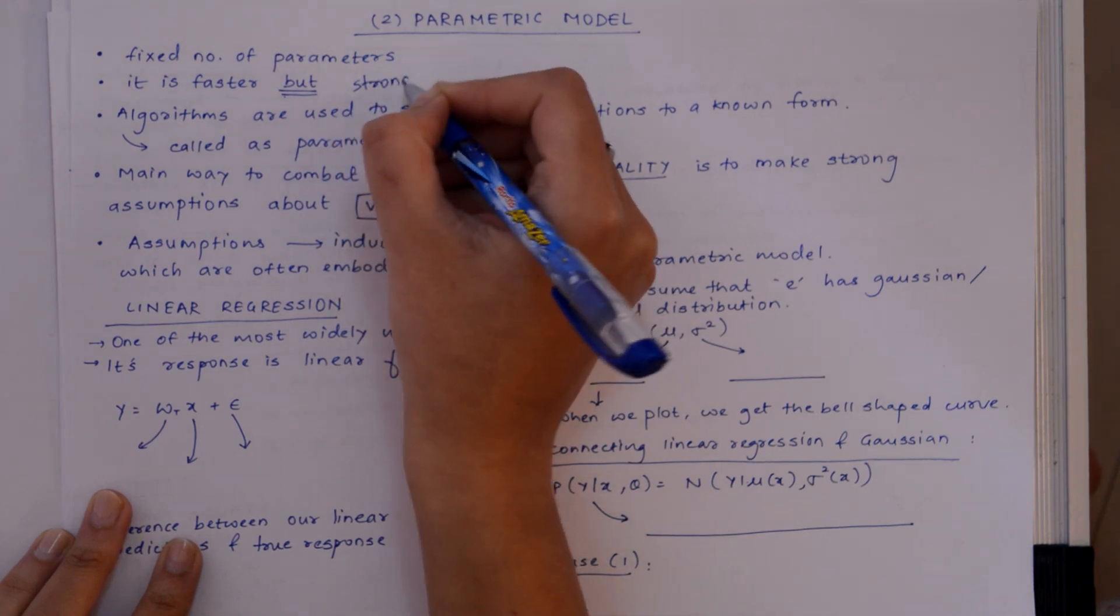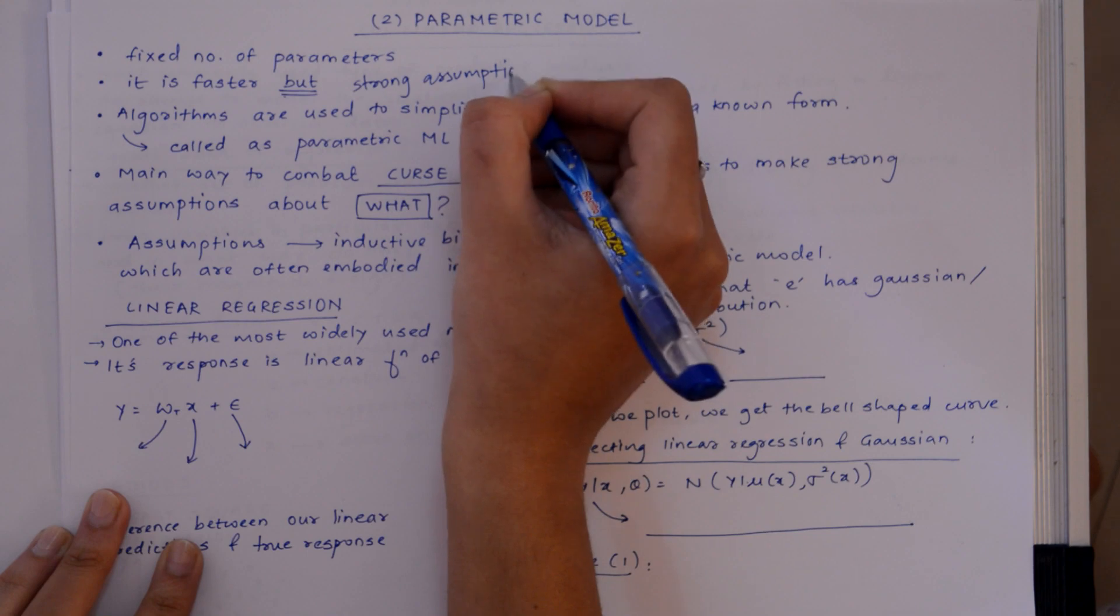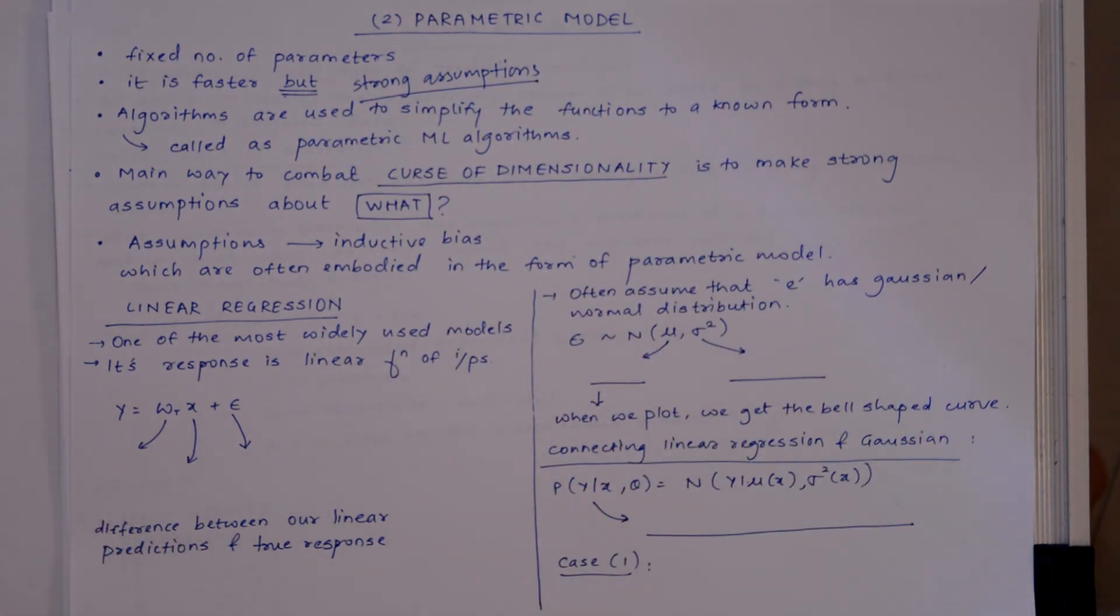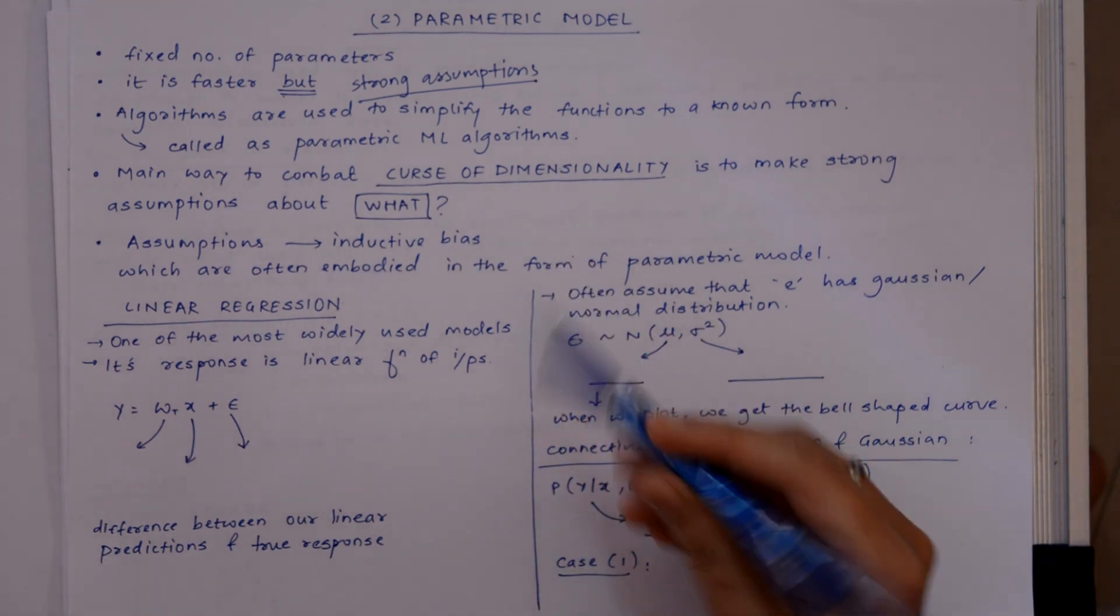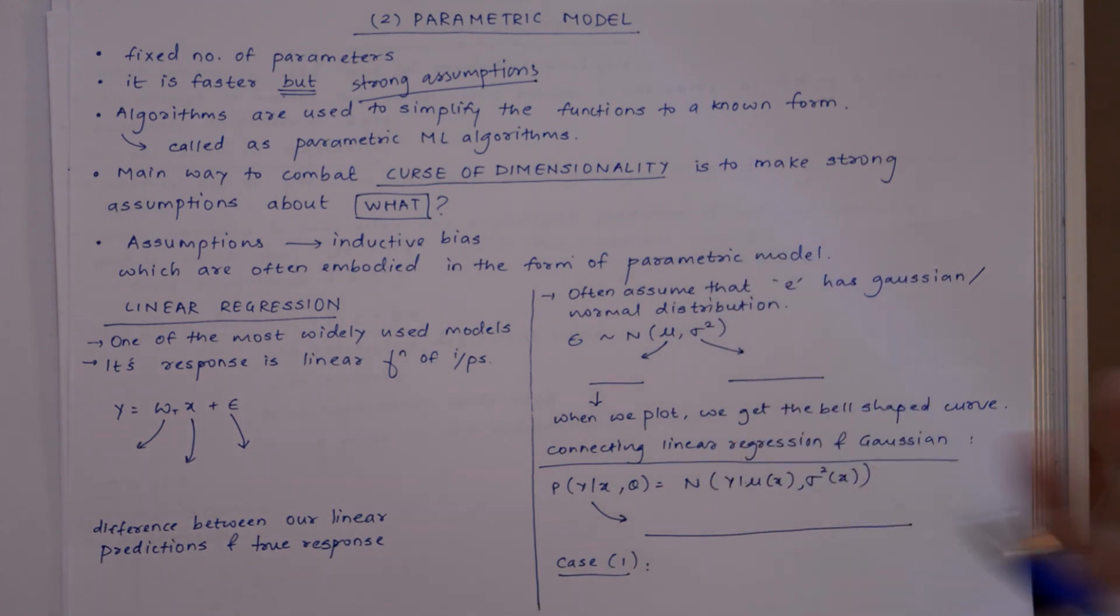Strong assumptions are needed to be made. These assumptions are often known as inductive bias, which are embodied in the form of parametric model. This model is the statistic model with a fixed number of parameters.